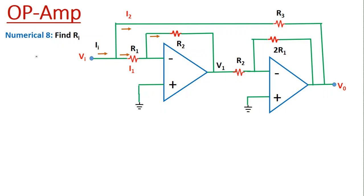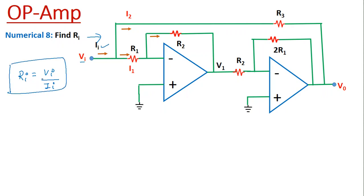Today's question is numerical number 8 and we have to find the input resistance Ri for this circuit diagram given. The input resistance Ri will be input voltage Vi divided by input current Ii. So we have to find out from this circuit diagram that Ri is equal to Vi divided by Ii.